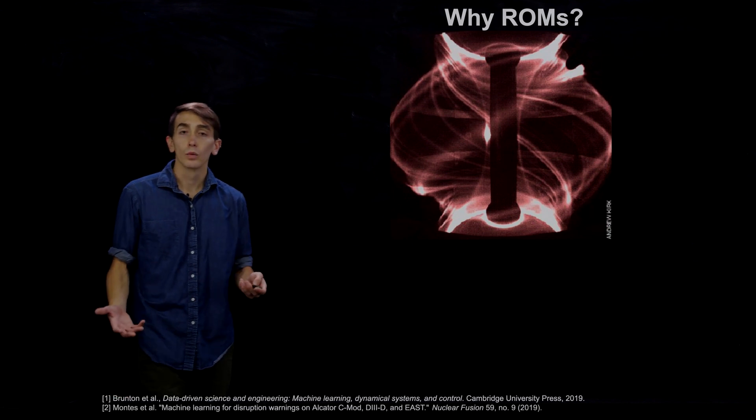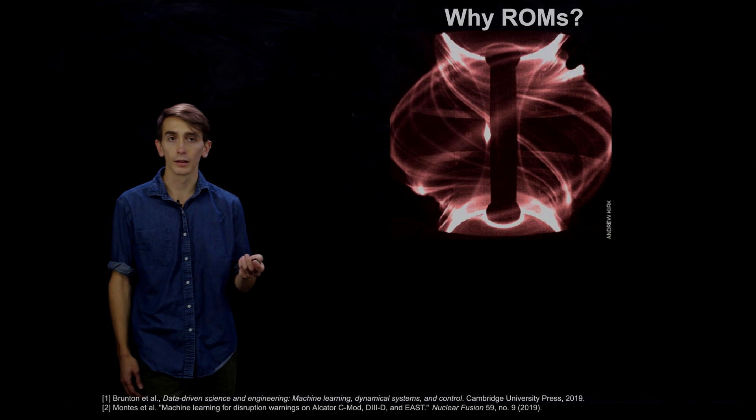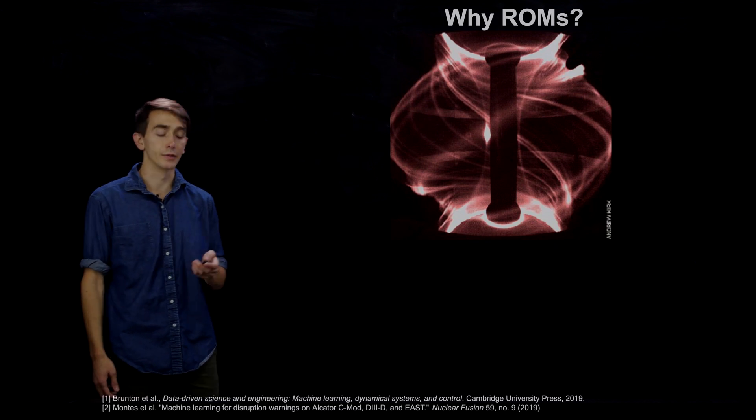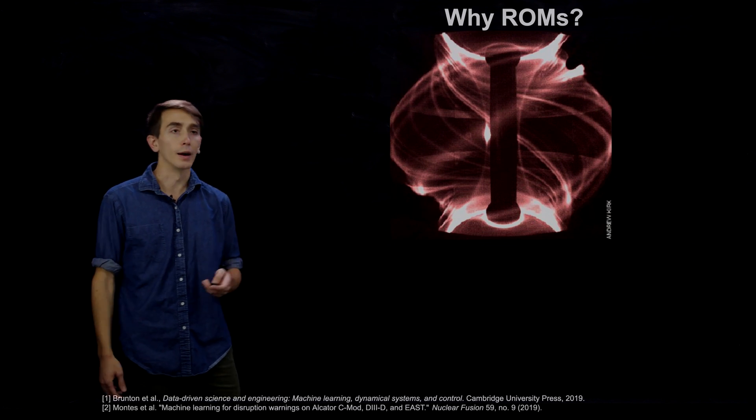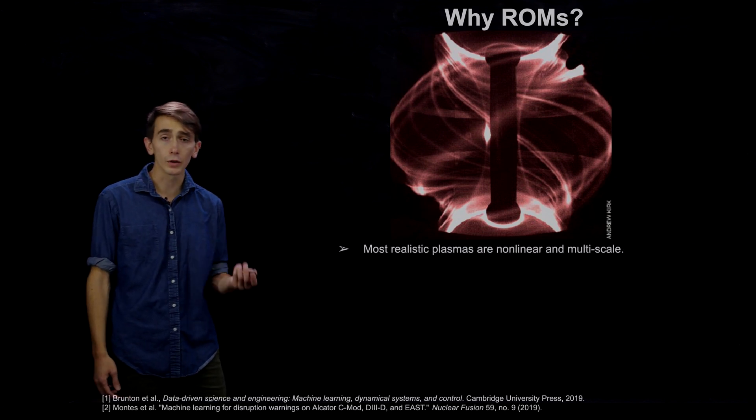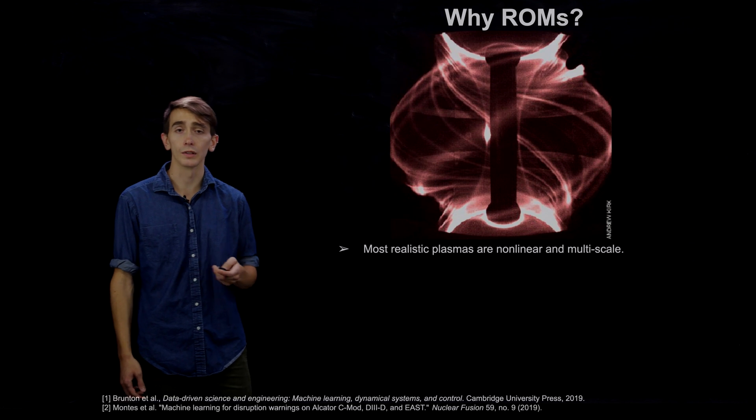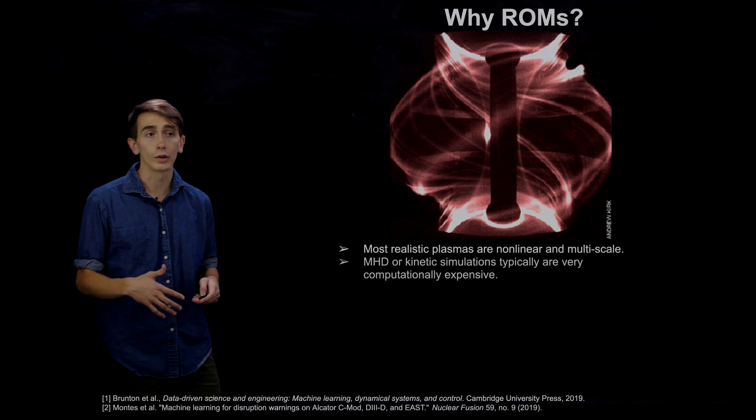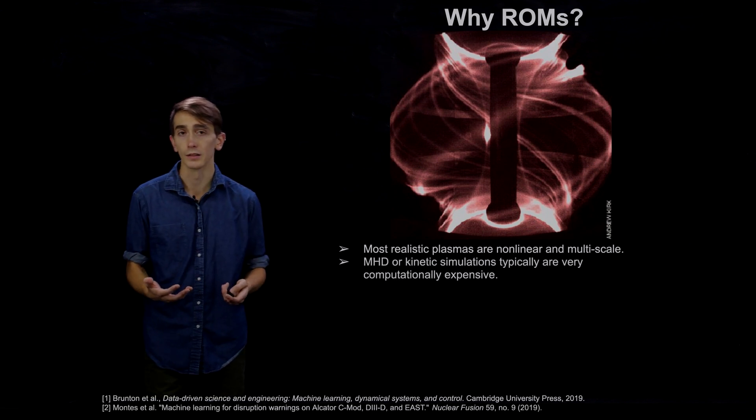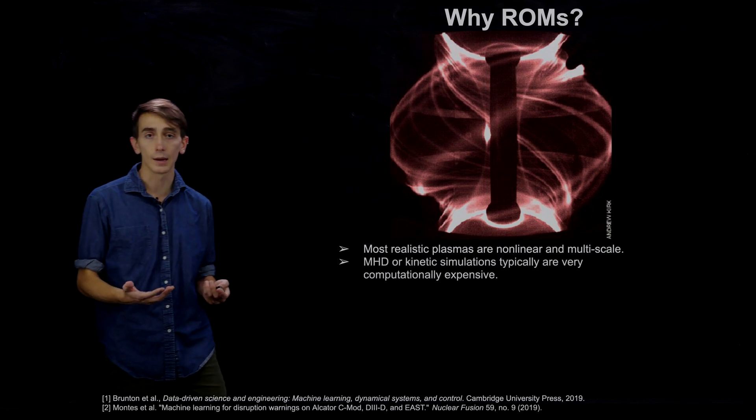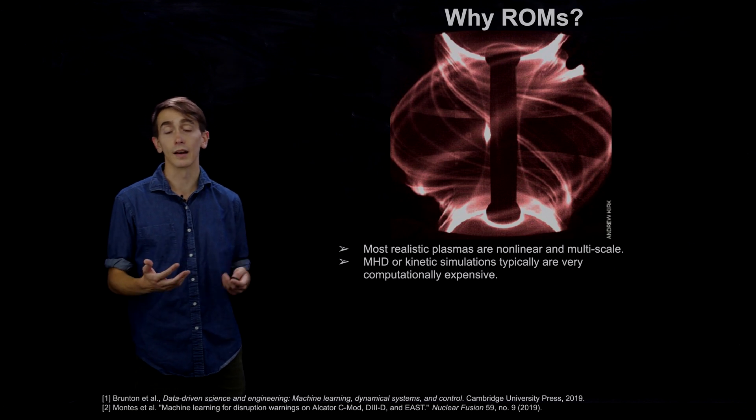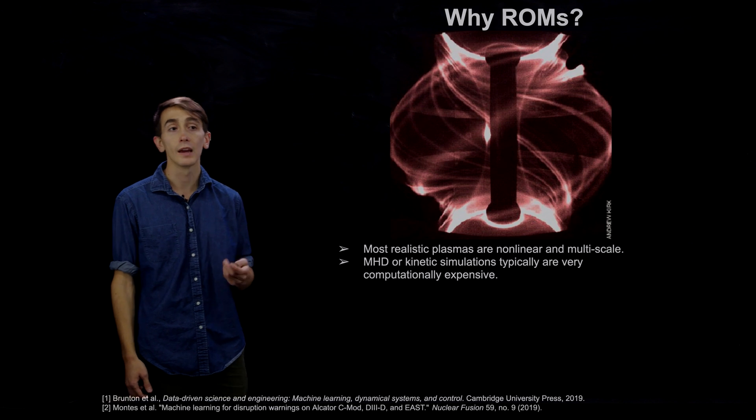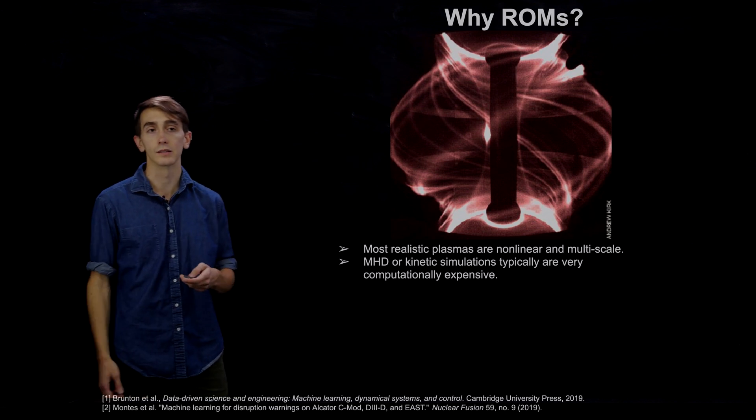So why work on reduced order modeling? Reduced order modeling is typically abbreviated ROM. So why ROMs, and in particular, why ROMs for plasmas? It turns out most realistic plasmas are non-linear multi-scale. What this means is that codes which you use to model and simulate them are going to be very computationally expensive. So magnetohydrodynamics, or MHD, or full kinetics, these are two different models which are used to model plasmas, and both are very computationally expensive for these reasons.